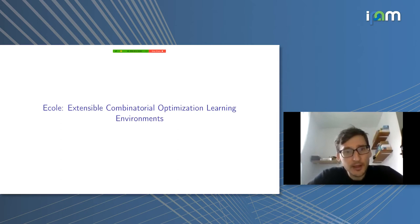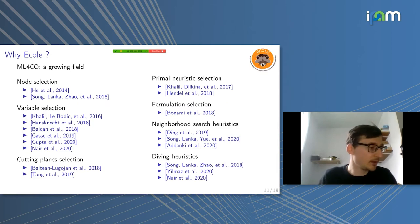And here comes Ecole. Ecole stands for Extensible Combinatorial Optimization Learning Environments. The idea is that we would like to provide learning environments for people to replace those expert rules by rules learned from data, using machine learning, using reinforcement learning. This is a Python library, and also we want it to be extensible because we don't want to decide on what are the right learning environments that people should look into. We want people to be able to add their own environments into the library as well.